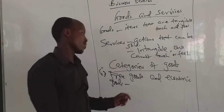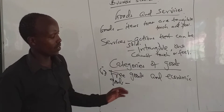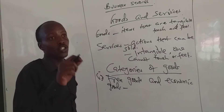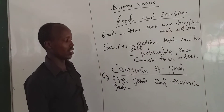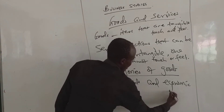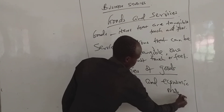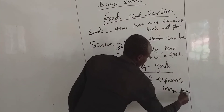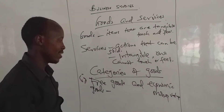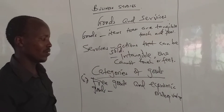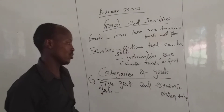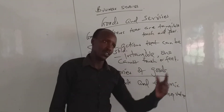Economic goods, on the other hand — from the word economy — these are goods which you need to pay something to get them. In other words, they have a monetary value. Like this pen: I bought this pen at 100 shillings, so you must pay something to get them. That is what we call economic goods.